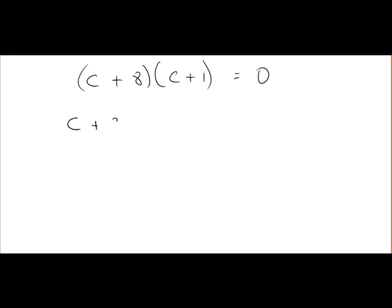So either c plus 8 equals 0 or c plus 1 equals 0. We can use these to get values for c. So c plus 8 is equal to 0. We want to get c on its own. If we subtract 8 from both sides, c plus 8 minus 8 will just leave us with c. 0 minus 8 is minus 8 and we get c equal to minus 8.